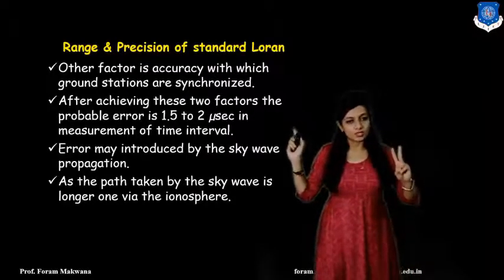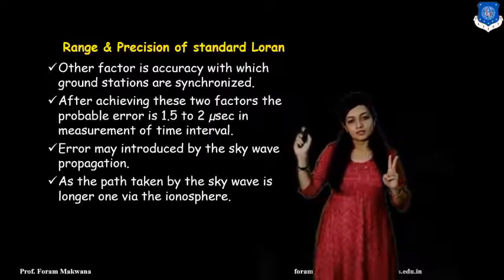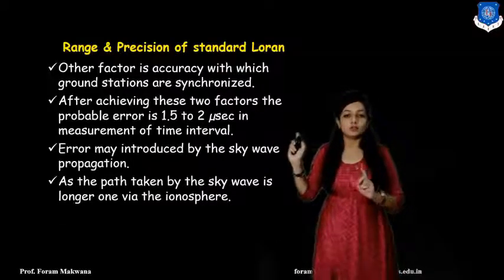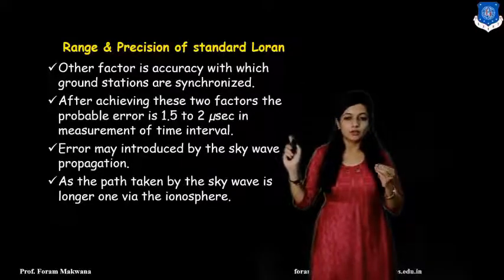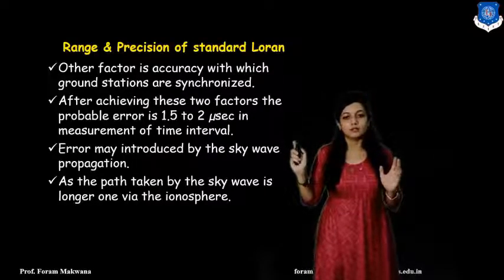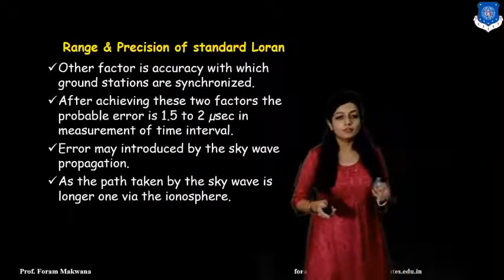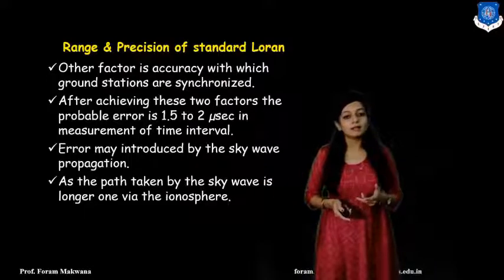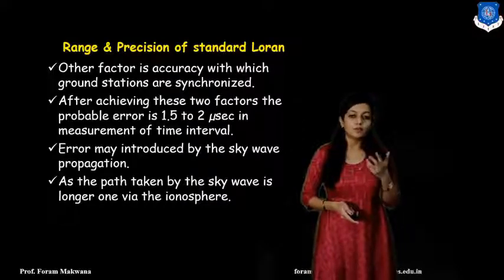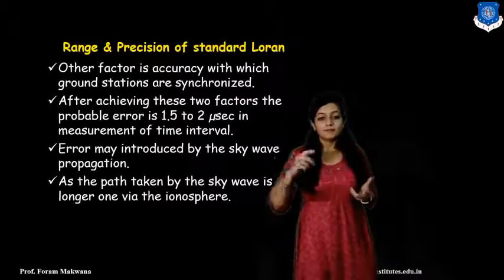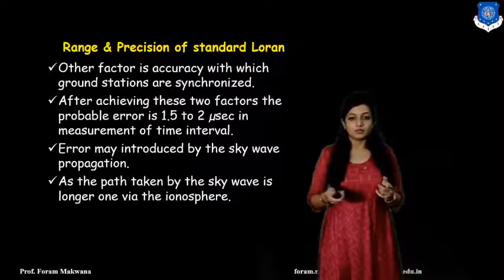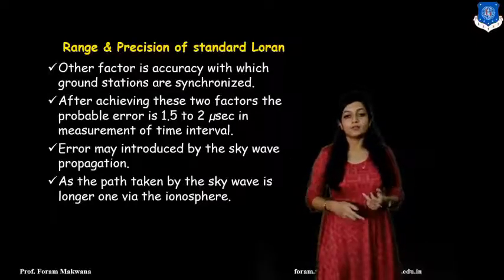After achieving these two factors, the probability of error is around 1.52 microseconds in the measurement of the time interval. We can have this delay of about two microseconds for the arrival of the signal, because error may be introduced due to sky wave propagation, as the path taken by the sky wave is longer via the ionosphere, which is made up of ions randomly located and affects signal propagation.